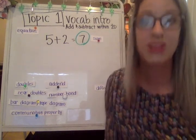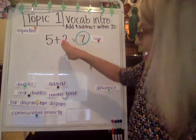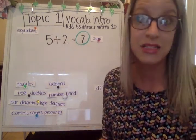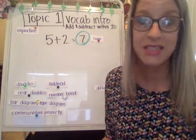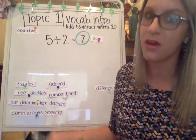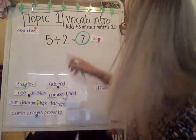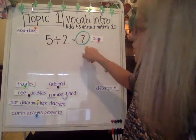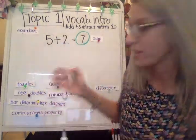When you're talking about the answer for five plus two, a more specific way to say the answer would just be called the sum. So the sum of five plus two is seven.